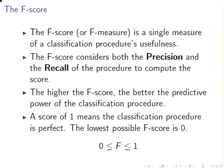The F-score or F-measure is a single measure of the classification procedure's usefulness. There's another one called accuracy, which is also a single measure. But the F-score is much more informative about some key aspects of the predictive power of the classification procedure — it considers both the precision and recall to compute the score. The higher the F-score, the better the predictive power. A score of one means the classification procedure is perfect; the lowest possible value is zero.